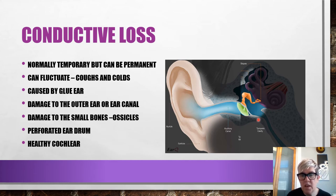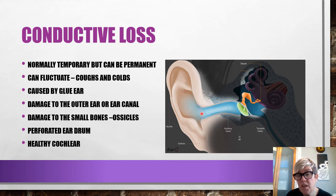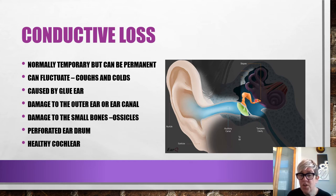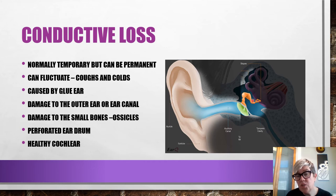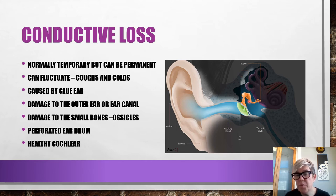With a conductive loss, the cochlea is fine and working properly — we just can't get the sound to it. Other causes of conductive hearing loss include damage to the outer ear affecting sound collection, a very narrow ear canal, or no entrance to the ear canal at all. Damage to the ossicles or a perforated eardrum can also cause a conductive loss. With all conductive losses, we have a healthy cochlea — it's all about the fact that we can't get sound to it in the way we'd like to, and that's when we look at different types of hearing devices.